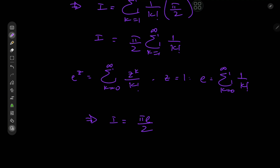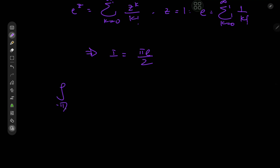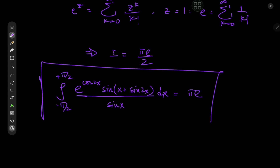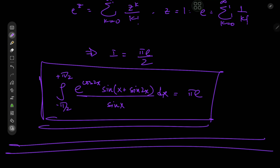πe/2 is a gorgeous result — absolutely beautiful, with our two favorite transcendental numbers together. And since we showed we're integrating an even function of x, the integral from negative π/2 to positive π/2 of e to the cosine 2x times (sinx + sin2x) divided by sinx dx equals twice I, which is π times e. I cannot get enough of this. This was absolutely beautiful and exotic in so many ways.